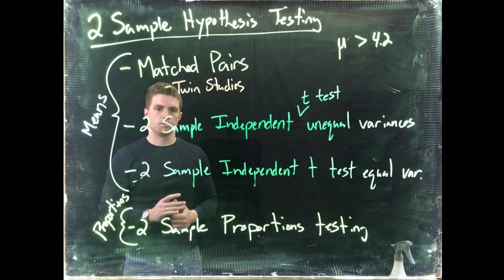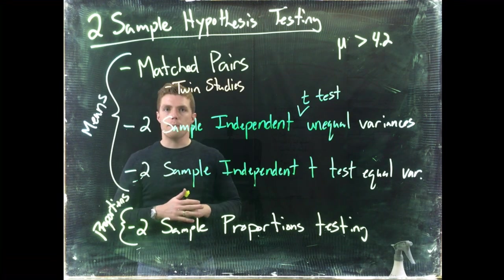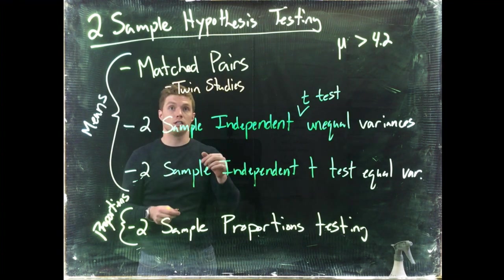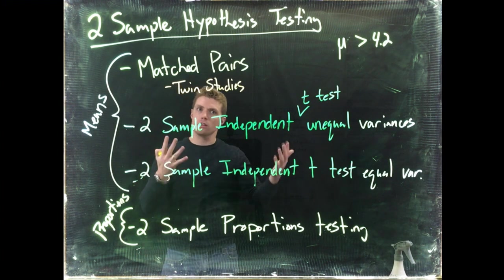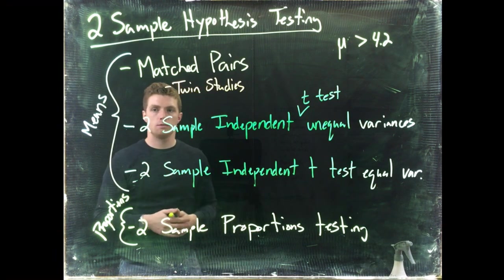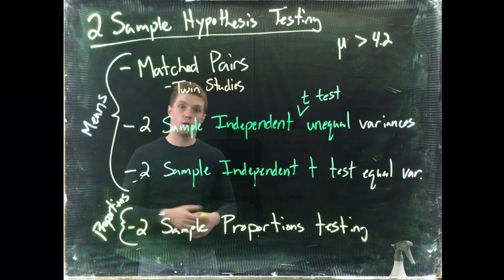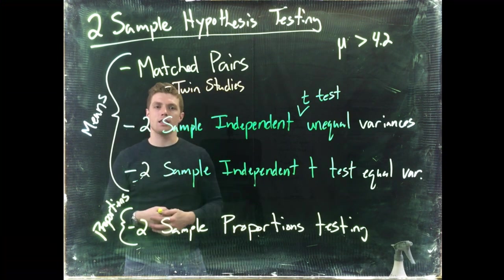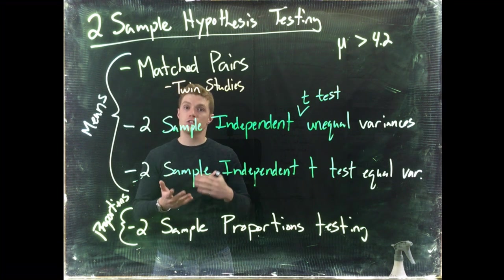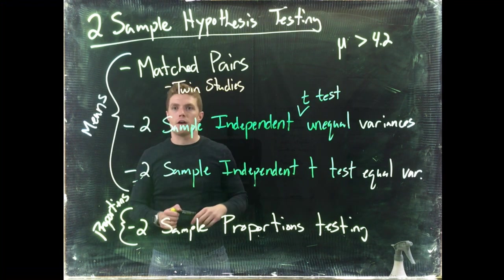It seems like a lot, but the groundwork is still the same. We still follow the same hypothesis testing steps: identify the type of data, identify the two populations we're comparing, and determine the parameter of interest — mean or proportion. We state our hypotheses, set alpha, identify our test equations, calculate the test statistic and p-value, then reject or fail to reject the null. Conclusions and confidence intervals are written the same way, just expanded to comparing two populations instead of one.